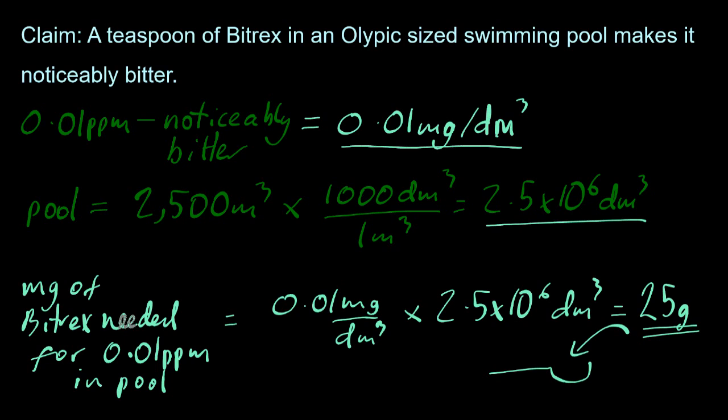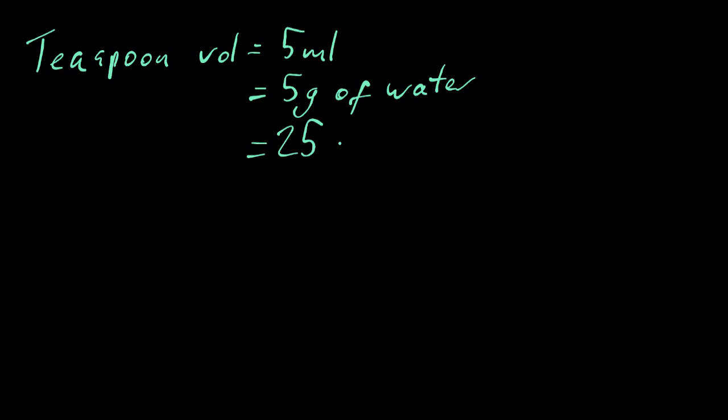Now does 25 grams fit in a teaspoon? Well, the volume of a teaspoon is 5 milliliters, and that means it holds 5 grams of water, because 1 milliliter of water is 1 gram. So 25 grams of Bittrex, hmm, so that would mean the density of Bittrex is 5 times that of water. So it's about the density of iron. That seems a little improbable to have an organic chemical to be as dense as iron.